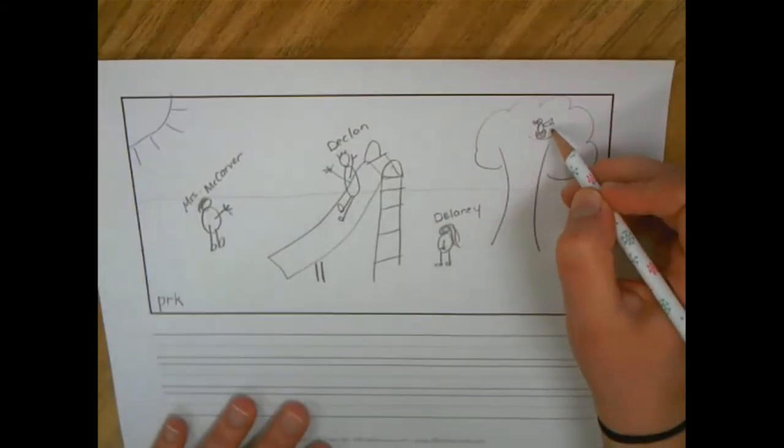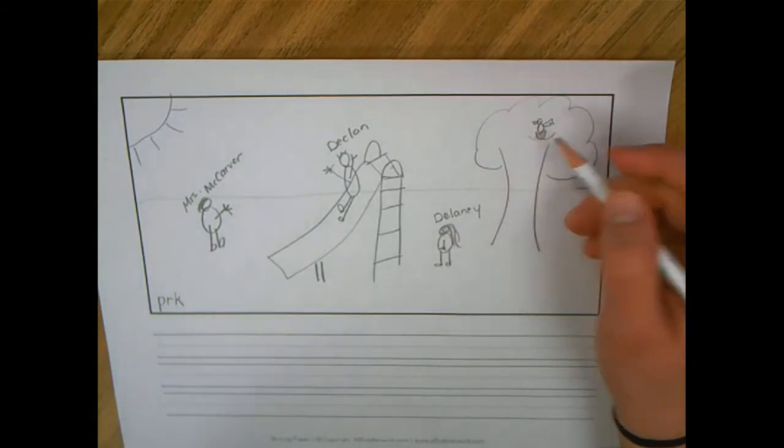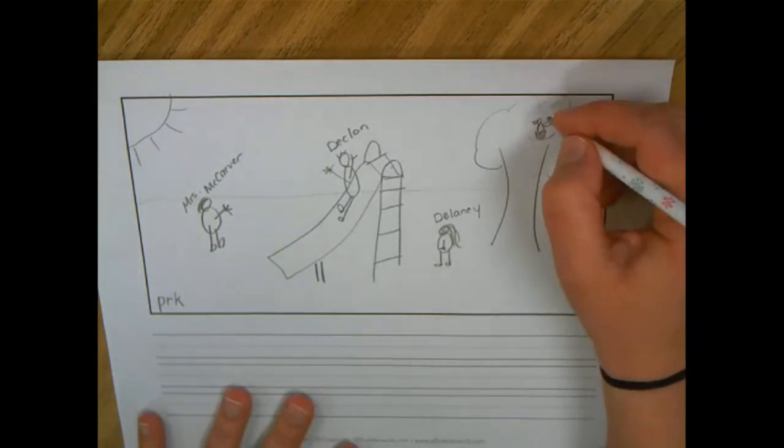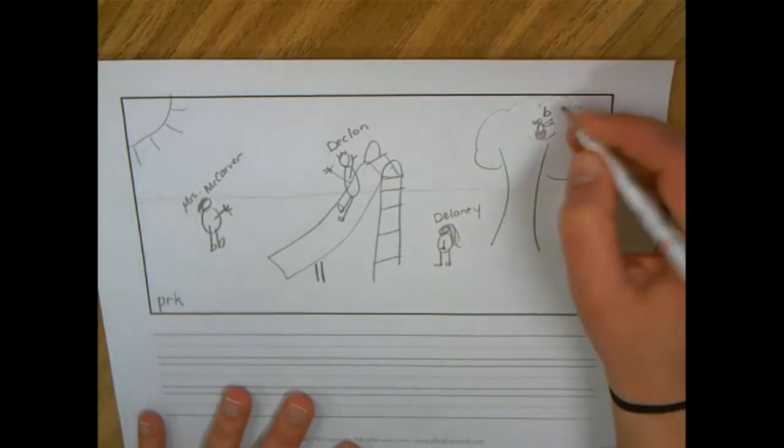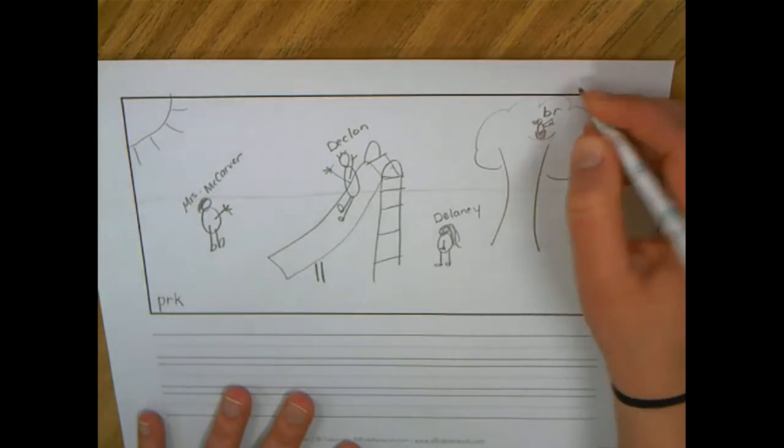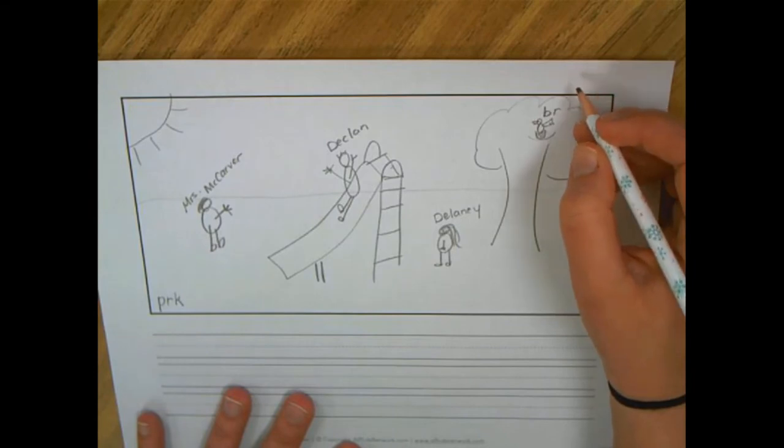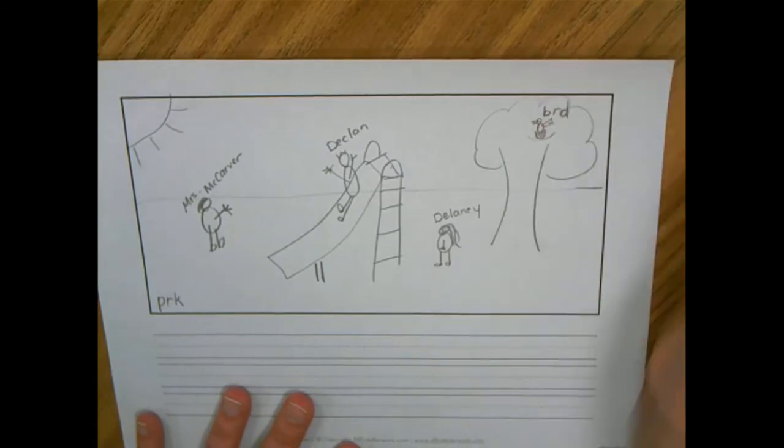Another important word I'm going to be writing is bird. Let me stretch that word slowly. Can you stretch it with me? Bird. What's the first sound I hear? The 'buh' sound. I know the letter B makes that. Brrr. Oh, there's R again. And then I hear at the end, what do you hear? Bird. Oh, I hear the D sound. What letter makes that? D. There's my D.